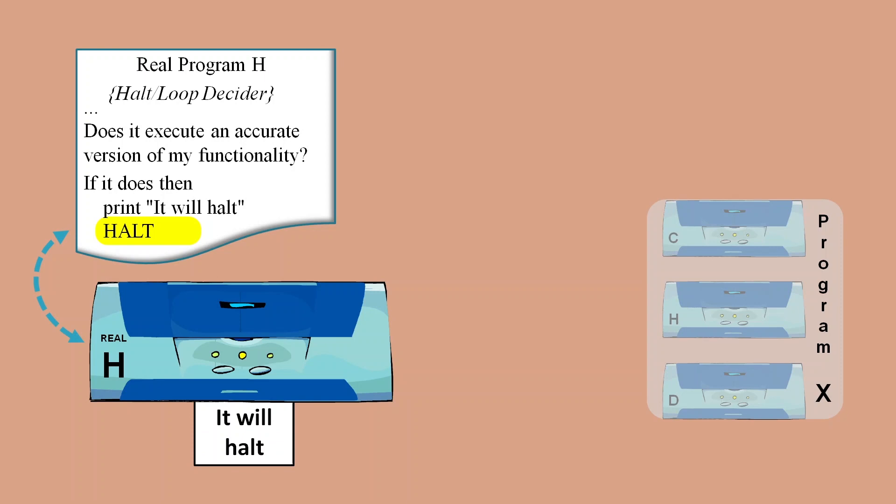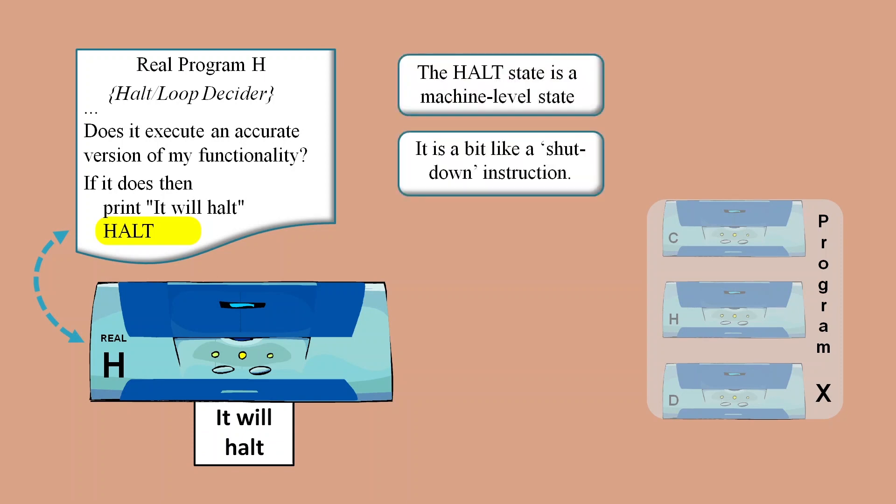Remember that this halt will stop the machine, so you can think of it as being a shutdown instruction. Now the H functionality inside Program X has to be one of two possibilities. Either it contains a faithful reproduction of real H's logic with its machine level halting, or it must contain an attempt to reproduce the functionality of H but without machine level halting.